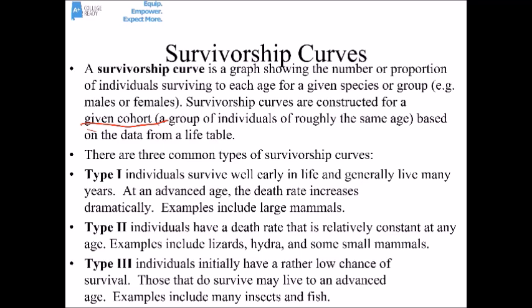Type 1 individuals survive well early in life and generally live quite a few years. At an advanced age, near the end of their life expectancy, the death rate increases very dramatically and most of them die relatively quickly. Large mammals, like elephants — even humans — typically have this type of survivorship curve.